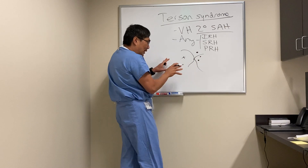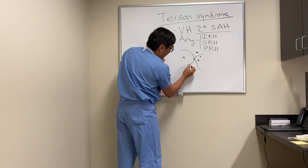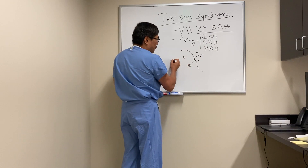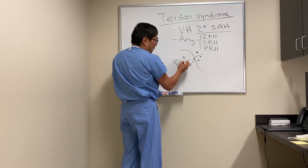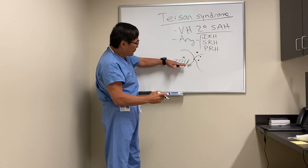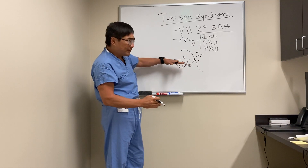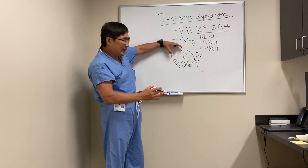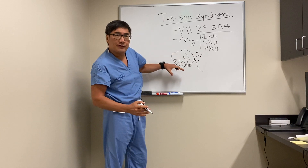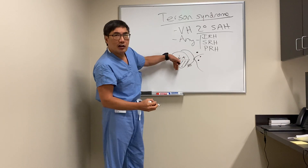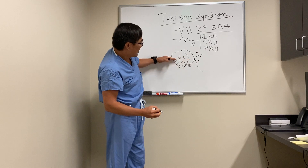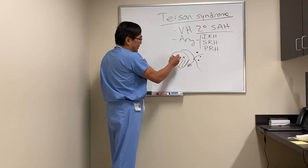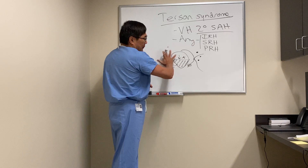Intraretinal hemorrhages are dot and blot. Subretinal hemorrhages are under the blood vessels, so the blood vessel runs on top of the hemorrhage. Preretinal hemorrhages are boat-shaped hemorrhages that assume this configuration because they're in the potential space underneath the hyaloid face and the retina. Even though the fluid fills that space, because of gravity the red cells all settle to the bottom, giving this boat-shaped appearance.